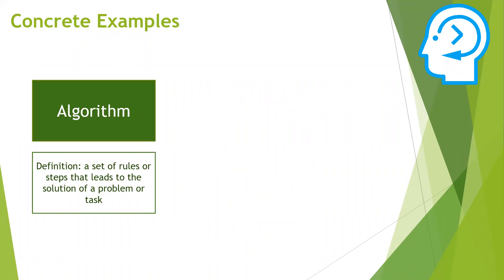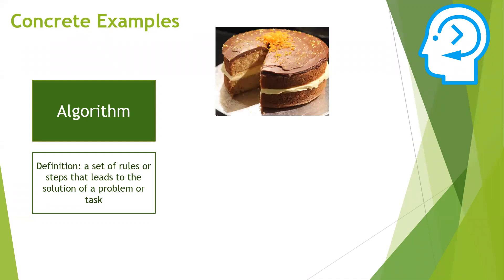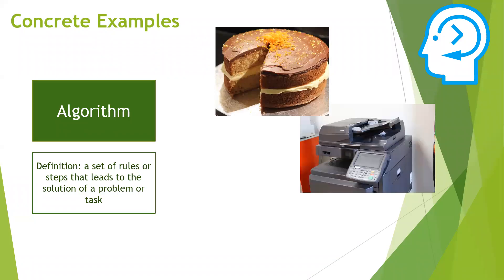But what usually does the trick is giving some concrete examples of algorithms that you are more familiar with. For example, when baking a cake, the recipe of that cake with the step-by-step description of how to make the cake is an algorithm. If you follow the steps, you will end up with a delicious cake in the end. Another example for an algorithm is troubleshooting a photocopier.